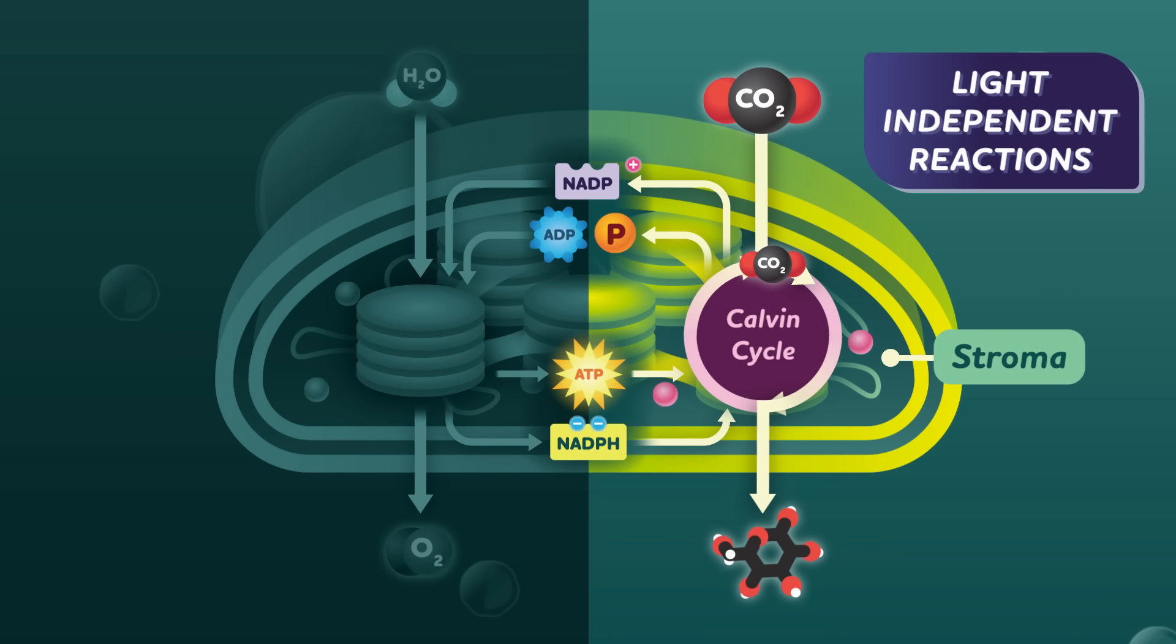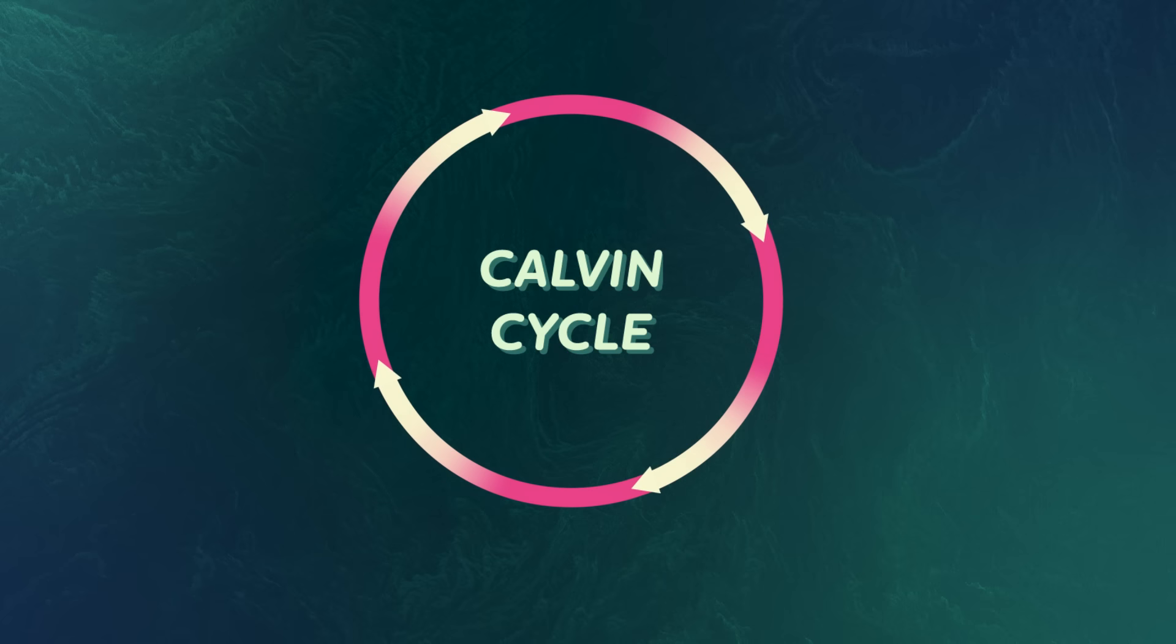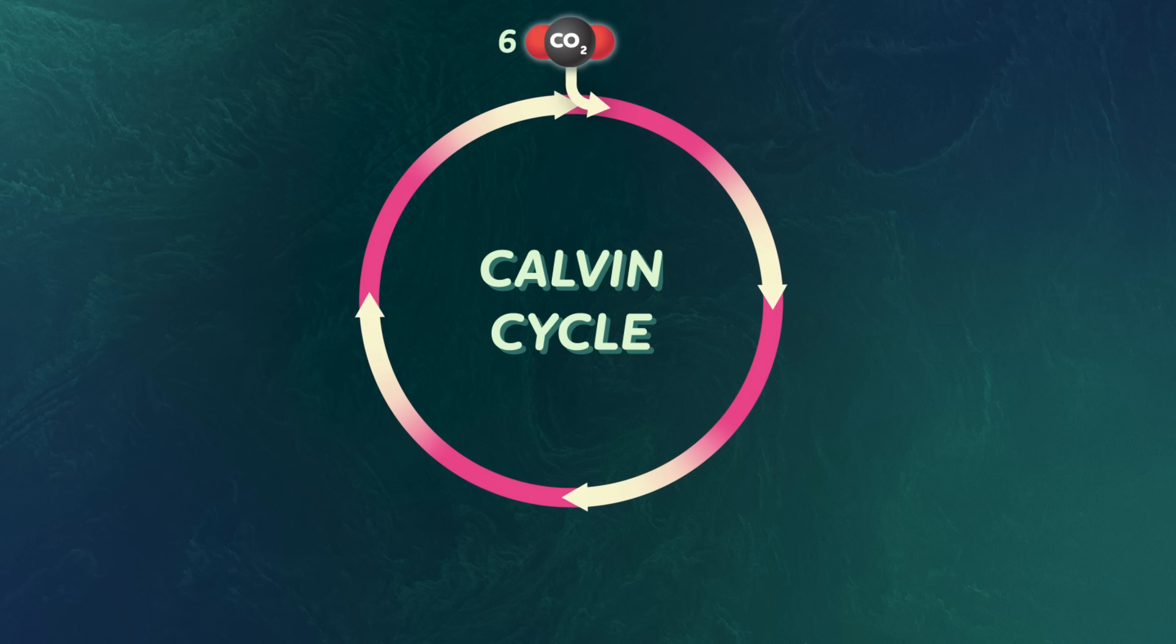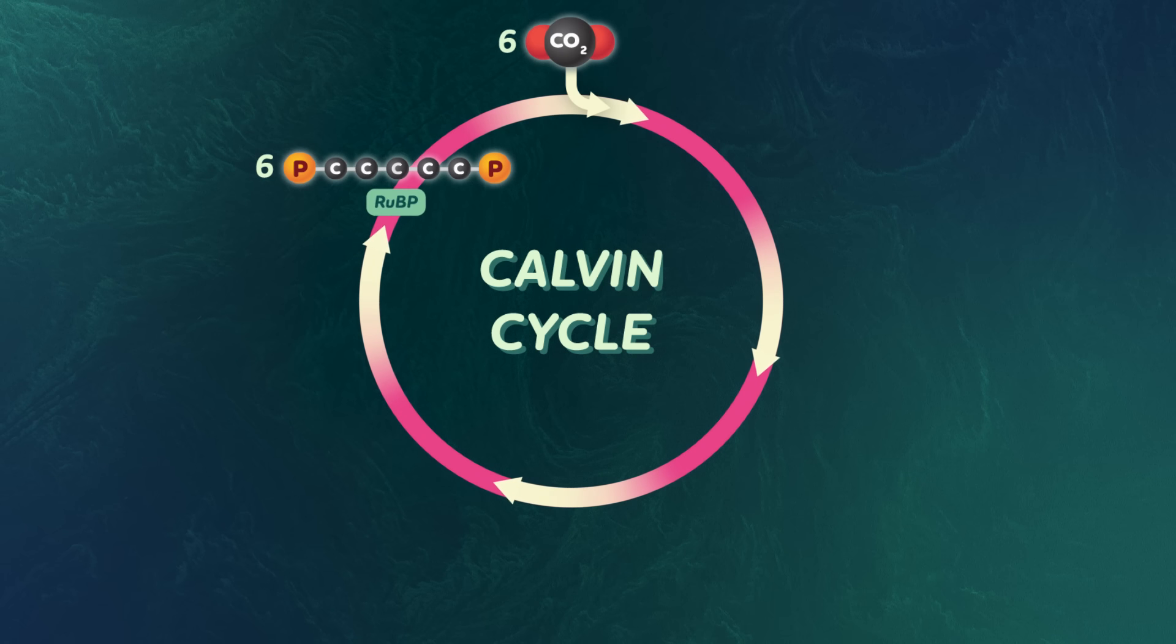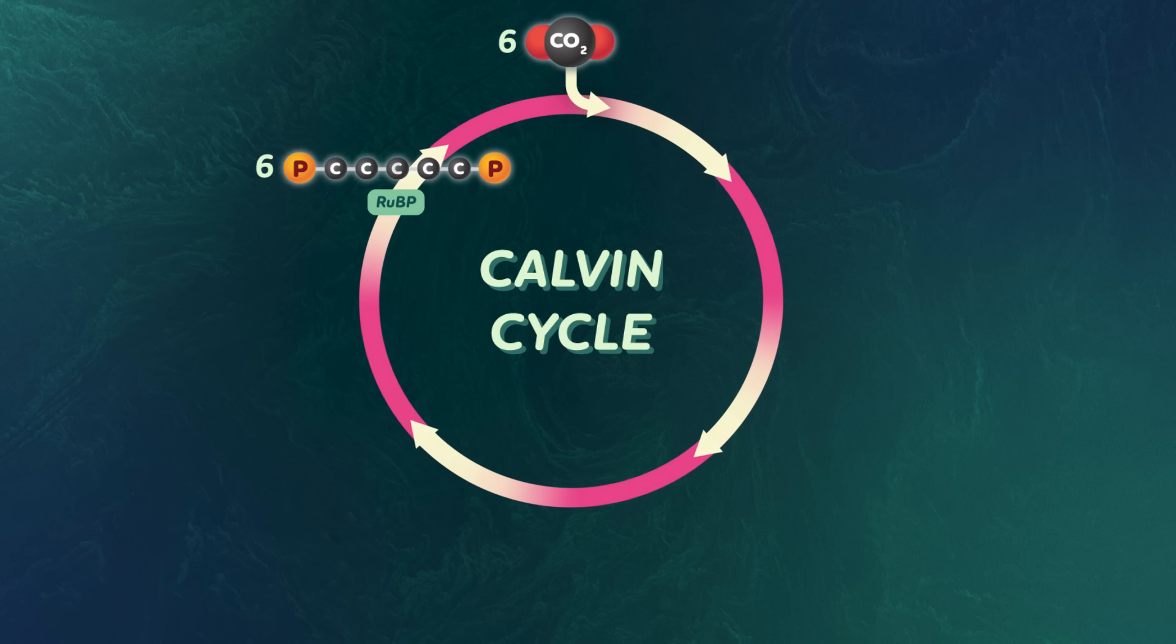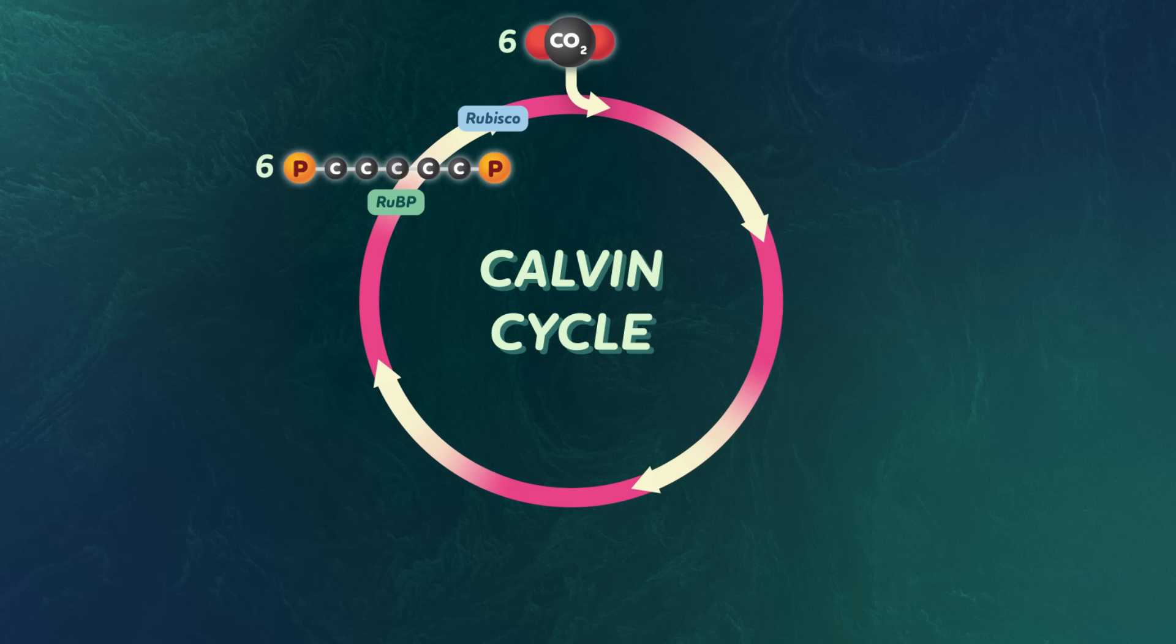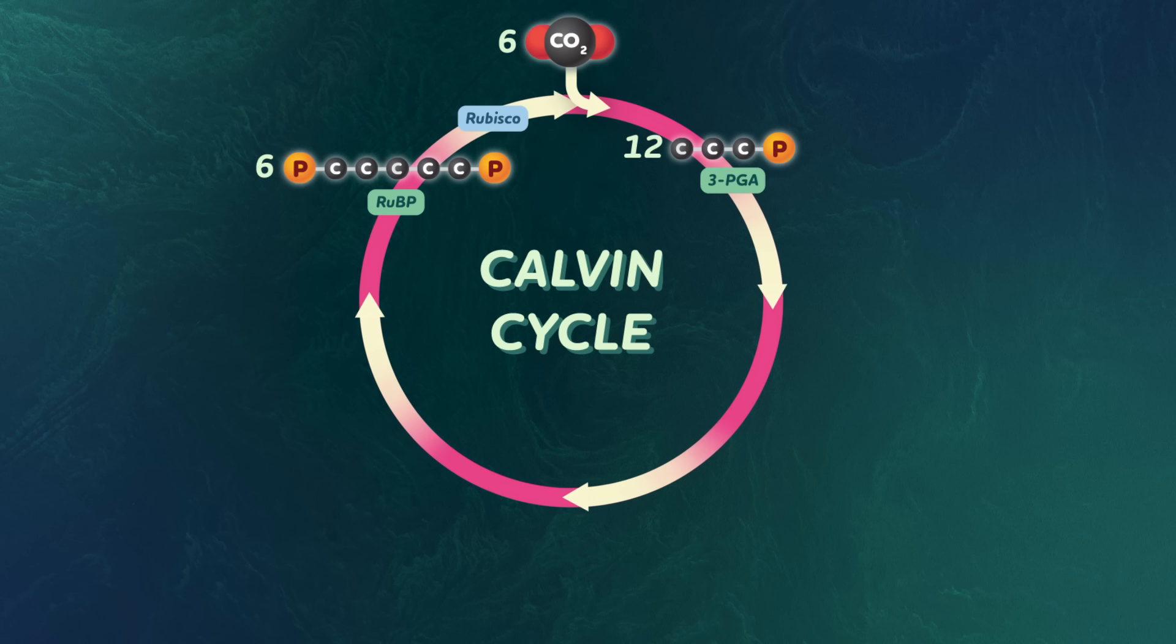And this is where organisms really get to the work of creating organic compounds to fuel their growth. Plants take in carbon dioxide molecules from the air. And those molecules team up with another molecule inside the chloroplast, called RUBP. The key thing to know about this character is that, like carbon dioxide, RUBP also contains carbon atoms. When carbon dioxide and RUBP get together, the result is a group of new molecules with three carbon atoms each.